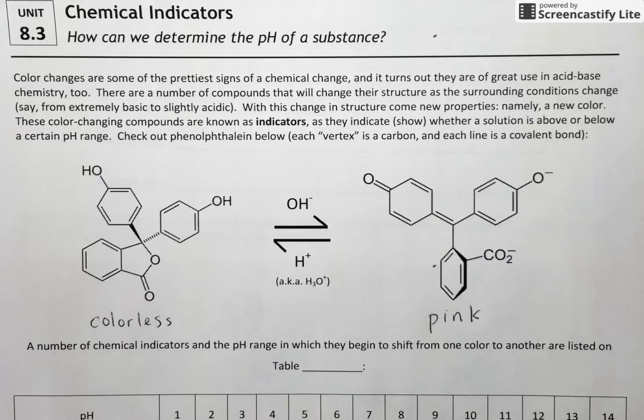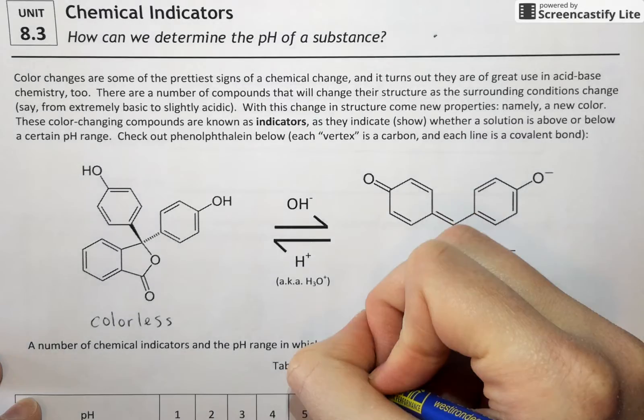So what we can use phenolphthalein for is to tell us if it's completely colorless, it's likely to be in a more acidic environment. Whereas if it's pink, it must be in a basic environment. And there are going to be lots of rules to help us predict exactly what color different indicators are going to be in a variety of different pHs. And all those rules are listed on reference table M.